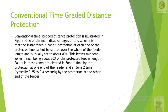One of the main disadvantages of the scheme is that the instantaneous Zone 1 protection at each end of the protected line cannot be set to cover the whole feeder length, and is usually set to 80%. This leaves two end zones, each being about 20% of the feeder. Faults in these zones are cleared in Zone 1 time by the protection at one end of the feeder, and in Zone 2 — typically 0.25 to 0.4 seconds — by the protection at the other end.